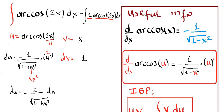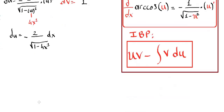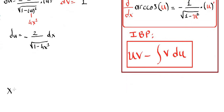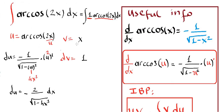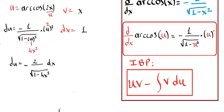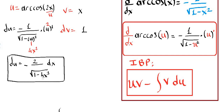Now we have our u, v, dv, and du. We're going to plug these into the integration by parts formula: u times v — our u is cosine of 2x and our v is x — so it will be x times cosine of 2x, minus the integral of v du. Our v is again x, and our du is negative 2 over the square root of 1 minus 4x squared dx.